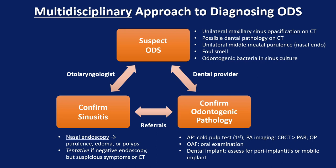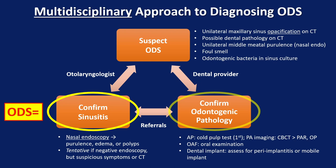Physical examination is critical for orantral fistula and dental implants. For orantral fistula, that entails oral examination of the suspicious site — if it's not obvious, you can have patients blow their nose against occluded nostrils or gently probe the possible fistula site. For patients with dental implants, the dental specialist assesses for periimplantitis or a mobile implant, as these can cause odontogenic sinusitis. Using this framework, diagnosing odontogenic sinusitis simply requires confirming the sinusitis and confirming the odontogenic pathology — if you have both, you have your diagnosis.